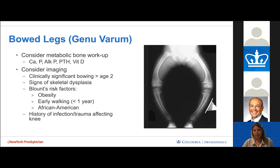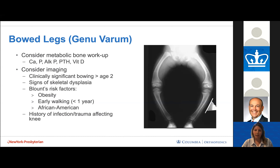For a child over age two with genu varum, considerations include a metabolic bone workup looking at calcium, phosphate, alkaline phosphatase, PTH, and vitamin D. Imaging is indicated for clinically significant bowing over age two, or if there are signs of skeletal dysplasia or risk factors for Blount's disease — including obesity, early walking, or African-American background. A known history of infection or trauma affecting the knee with progressive genu varum should also prompt referral.